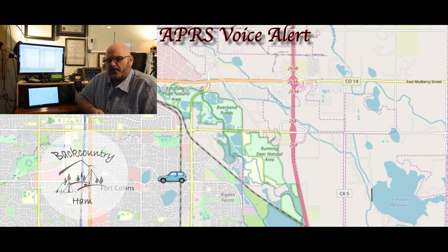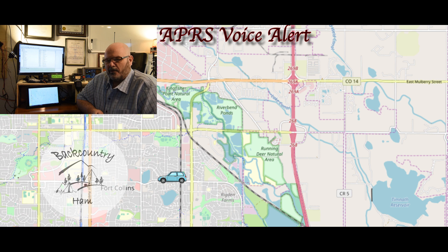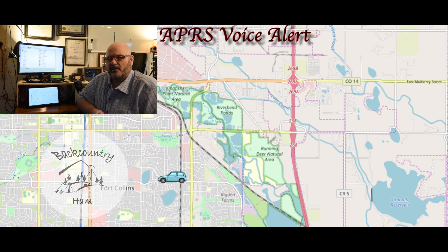When someone is in simplex range, if their packet does not include a secondary frequency that they are monitoring, you can make a short transmission over the APRS frequency using the 100 Hz tone, announce their call sign when you want to contact them, use a standard protocol — announce their call sign followed by yours — and then you must say 'APRS Voice' or 'transmitting on APRS Voice.'